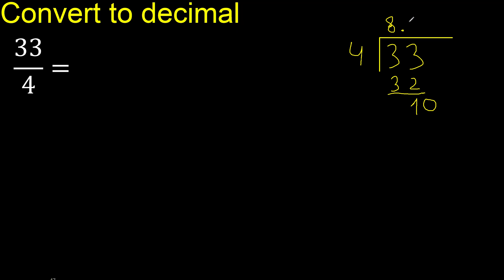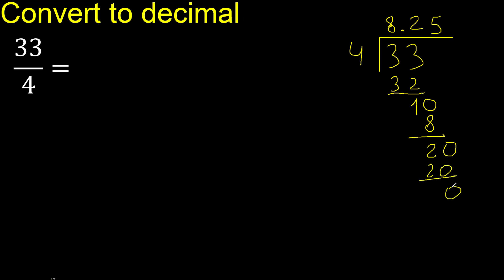4 multiplied by 3 is greater, so 4 multiplied by 2 is 8. 10 minus 8 is 2. Next, always complete with 0 — bring down a 0, giving 20. 4 multiplied by 5 is 20. 20 minus 20 is 0. Therefore, finish.